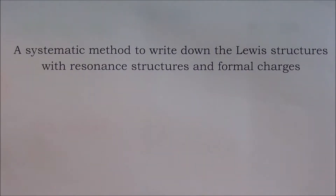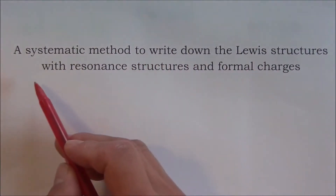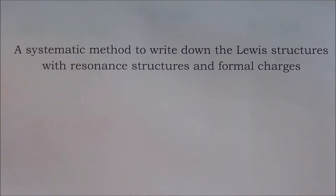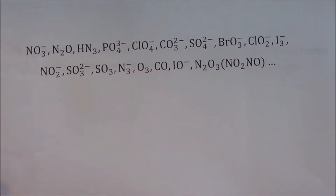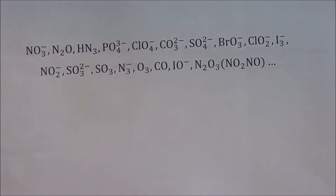Good morning, I'm Dr. Huang. Today I'm going to teach you a systematic method to write down the Lewis structures with resonance structures and formal charges. There are a lot of molecules and ions whose Lewis structures are very difficult to write down correctly. If you can follow the procedures I'm teaching you here, it will be relatively easy and fast to write down the correct Lewis structures with resonance structures and formal charges for any molecule or ion.